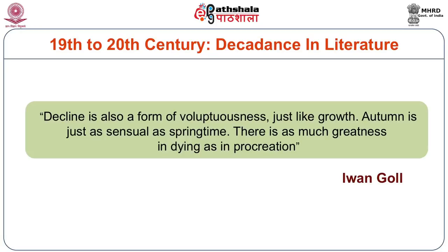When we look at the 20th century, the first thing that comes to mind is decadence — decadence in literature — which takes you again to the 19th century, to this classic book by Walter Pater published in 1885, titled Renaissance. Before we look at this text, I would like to read one line from Evan Gold, who talks about decadence: 'Decline is also a form of voluptuousness, just like growth. Autumn is just as sensual as springtime. There is as much greatness in dying as in procreation.'